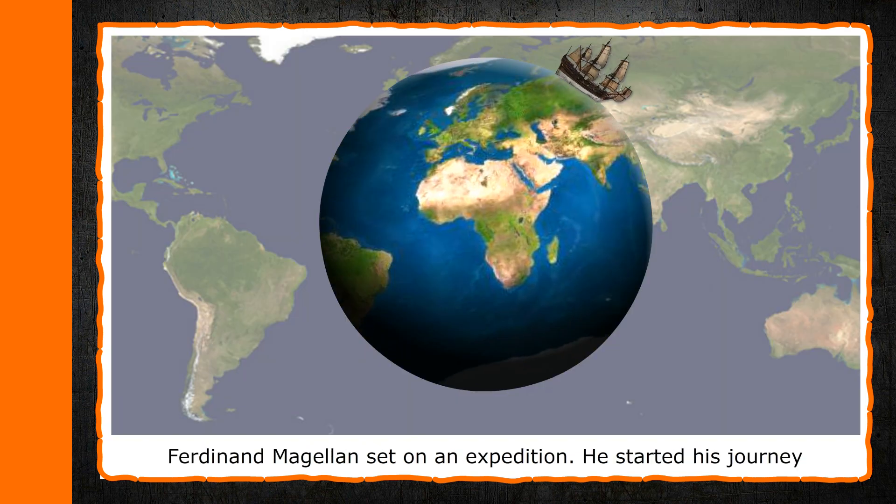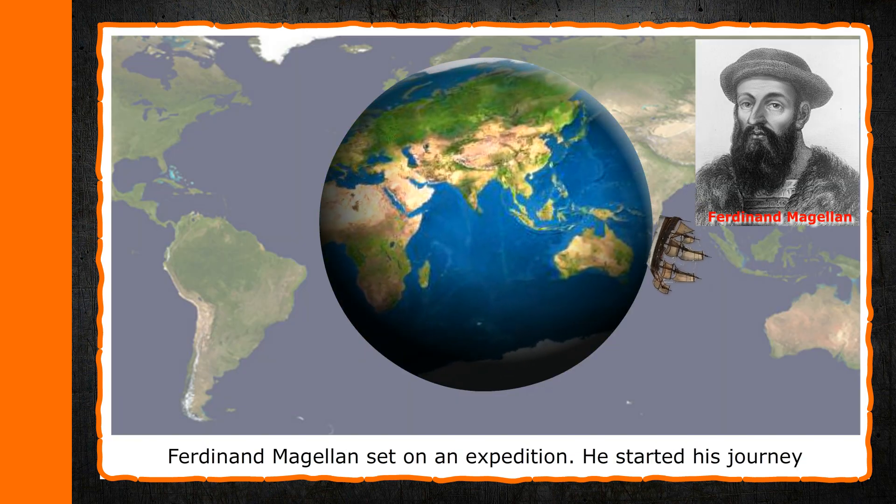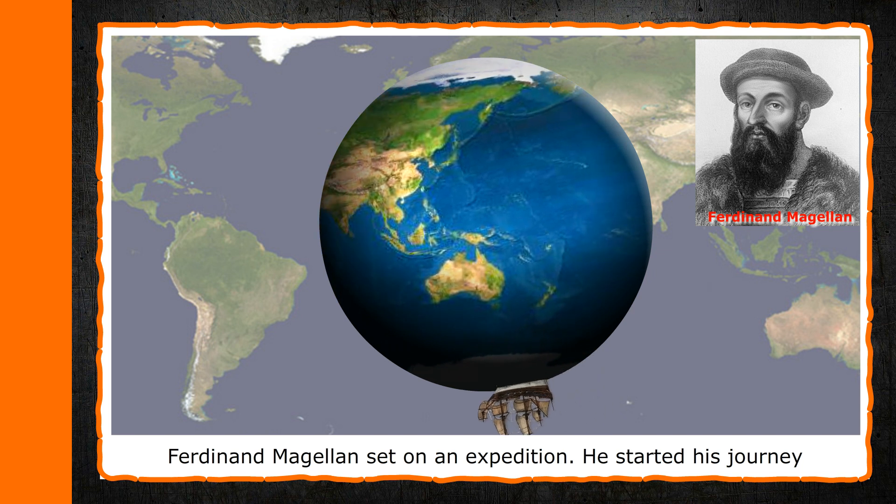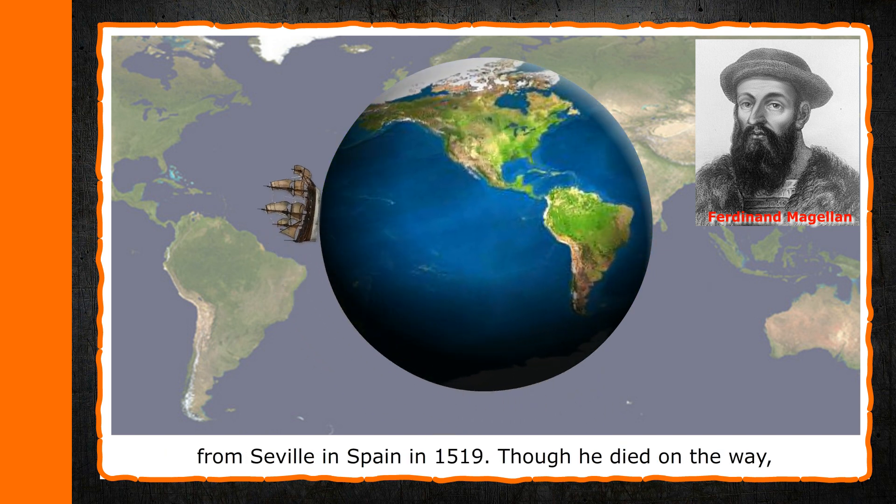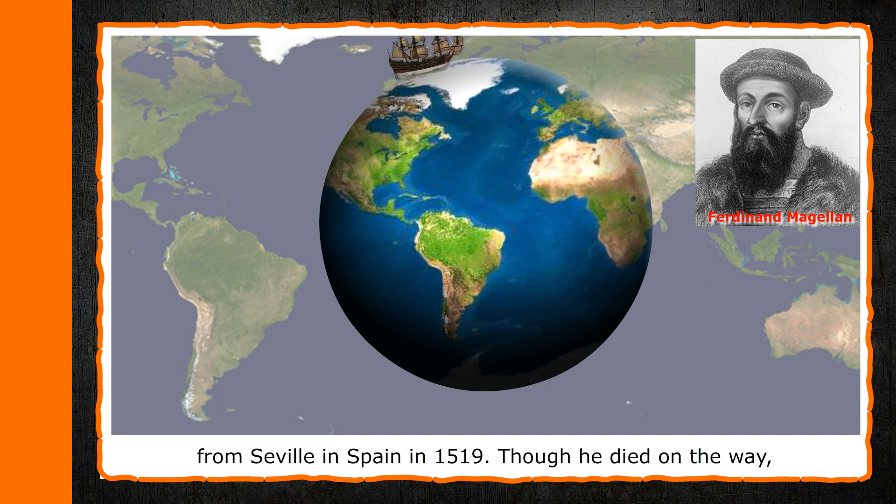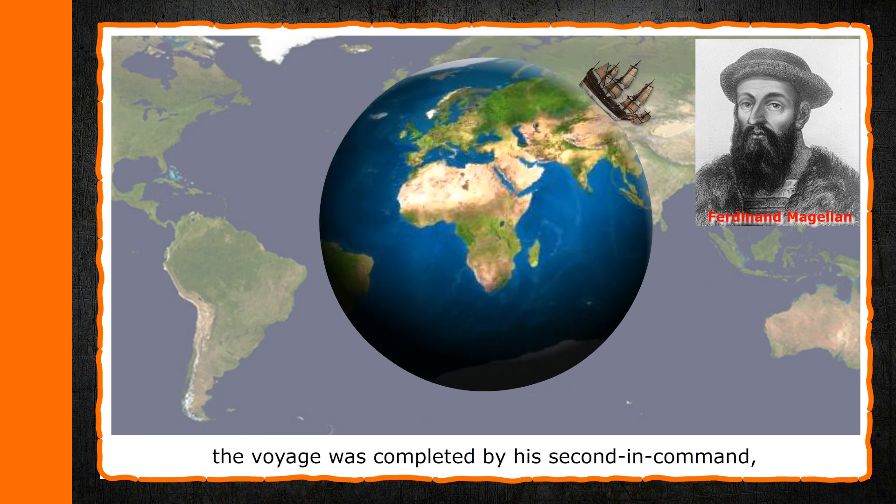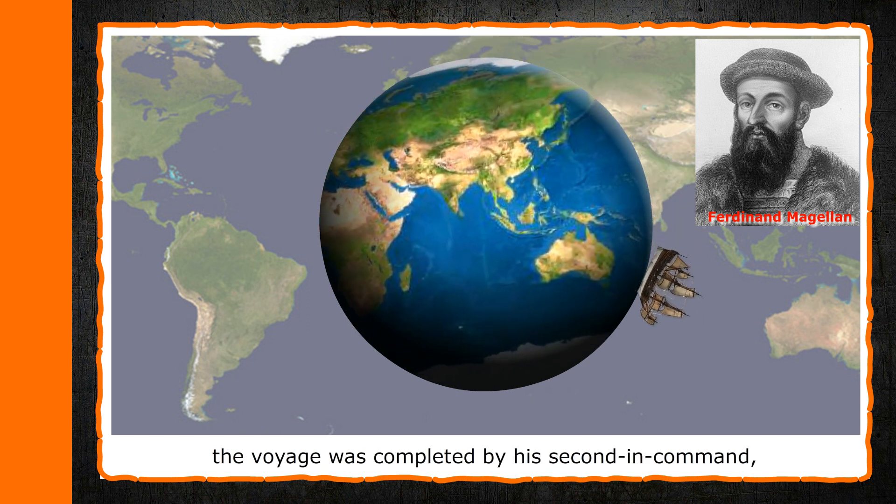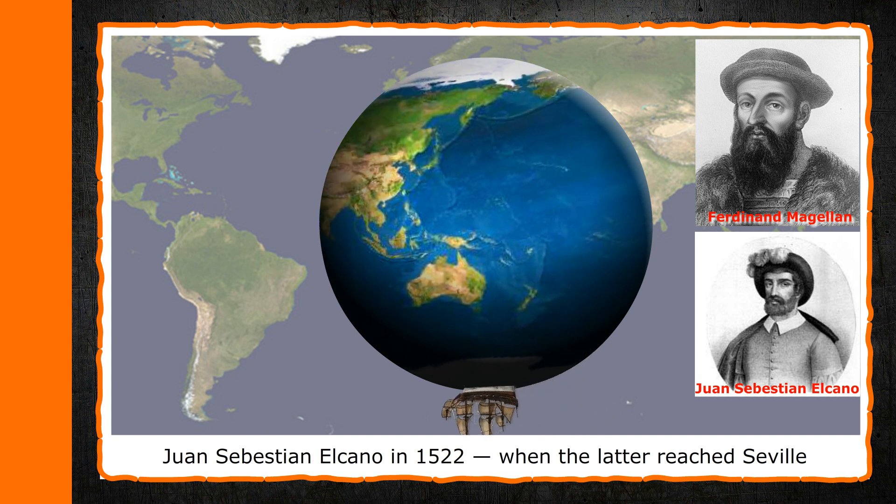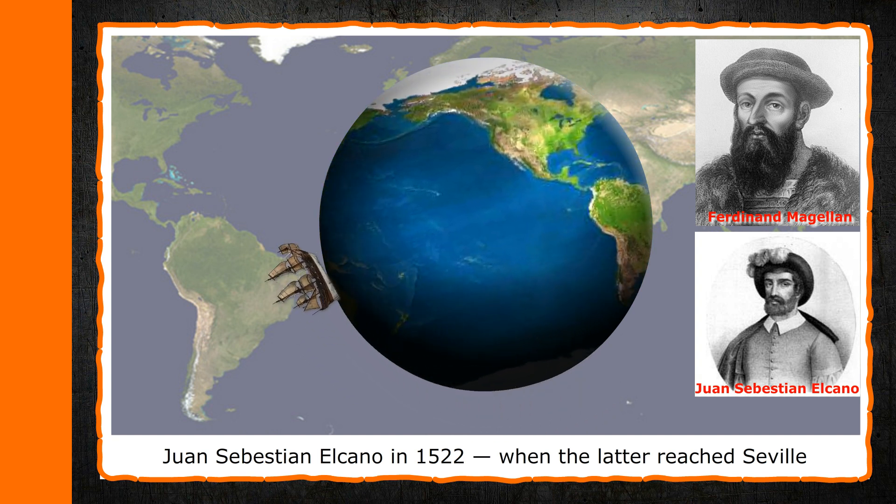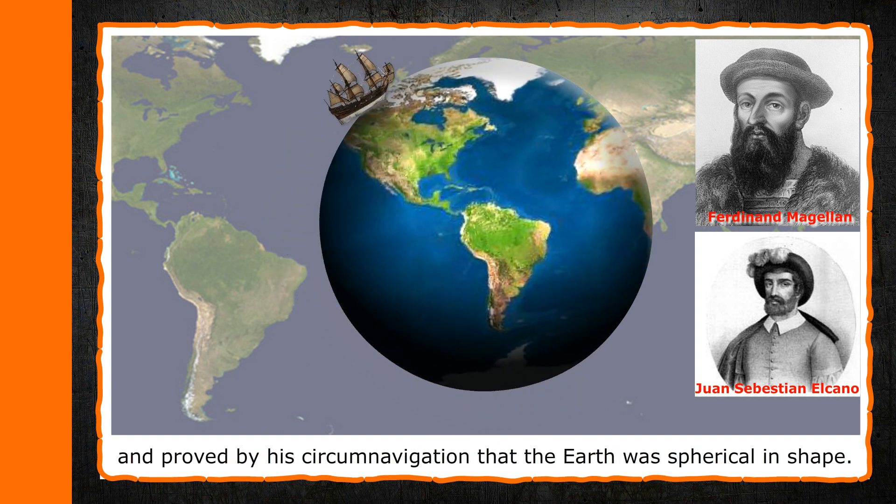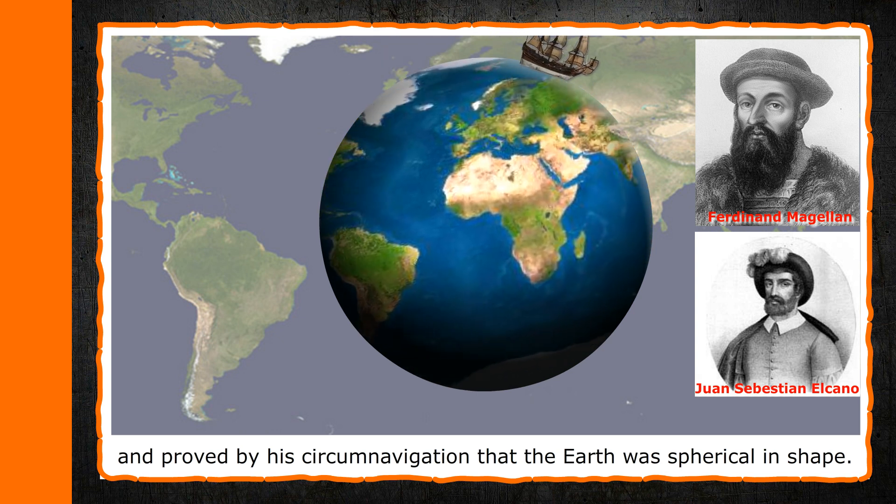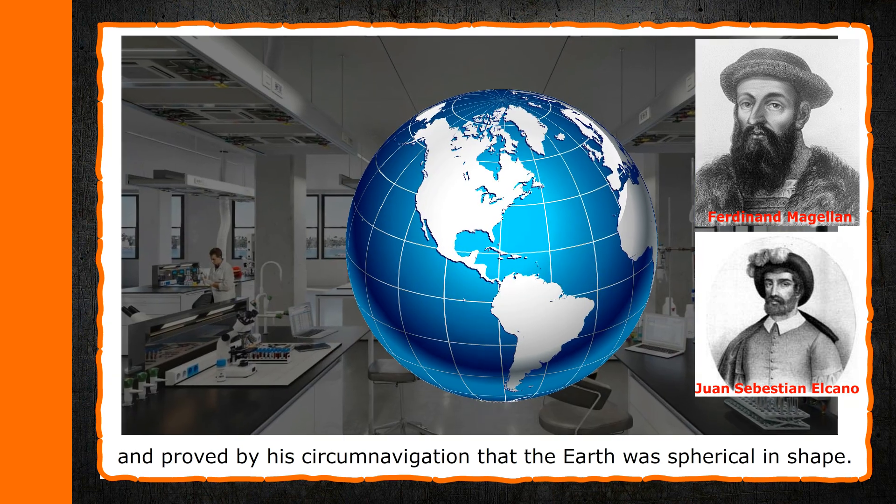In the 16th century, a Portuguese explorer, Ferdinand Magellan, set on an expedition. He started his journey from Seville in Spain in 1519. Though he died on the way, the voyage was completed by his second-in-command, Juan Sebastián El Cano in 1522, when the fleet reached Seville and proved by his circumnavigation that the earth was spherical in shape.